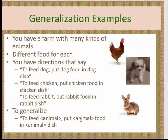So why not write the instruction once by generalizing? To feed the animal, put the animal food in the animal dish. But what is 'animal'? Animal is like a placeholder — the program will tell us the animal is going to be a horse, and we apply that to the generalized instruction: to feed the horse, put the horse food in the horse dish. This instruction will work for any kind of animal. Would you rather think of every possible animal and write a different instruction, or write one instruction for all animals? That's why generalization works.